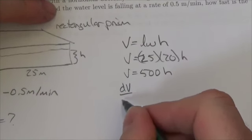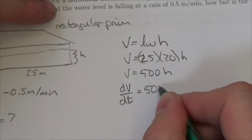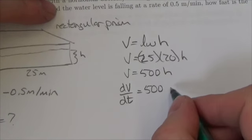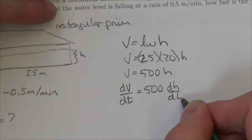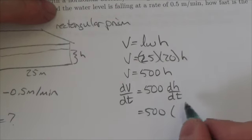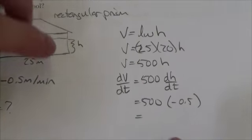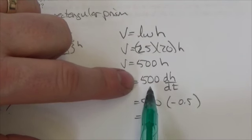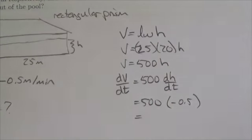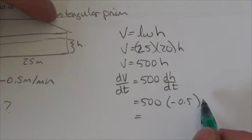So the derivative of v will be 1 dv by dt. The derivative of h will be 1 times dh by dt. And I know that dh by dt is negative 0.5 meters per minute. Now remember, this 500 represents 500 meters squared. That's an area calculation there. And so this is going to be meters per minute.